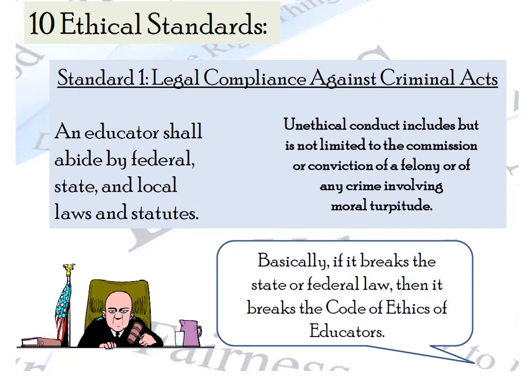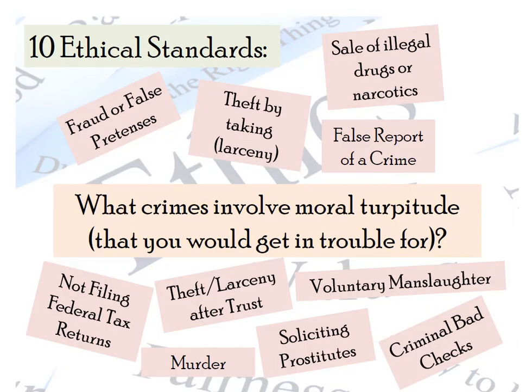There is a statement in there that speaks about unethical conduct including but not limited to conviction of felonies or any crime involving moral turpitude. So what exactly is moral turpitude? These are a listing of some crimes that fall into that category, which is basically questioning the morals of the individual. A lot of it is lying, theft, sale of illegal drugs, false reporting, voluntary manslaughter, bad criminal background checks, and not filing federal taxes.